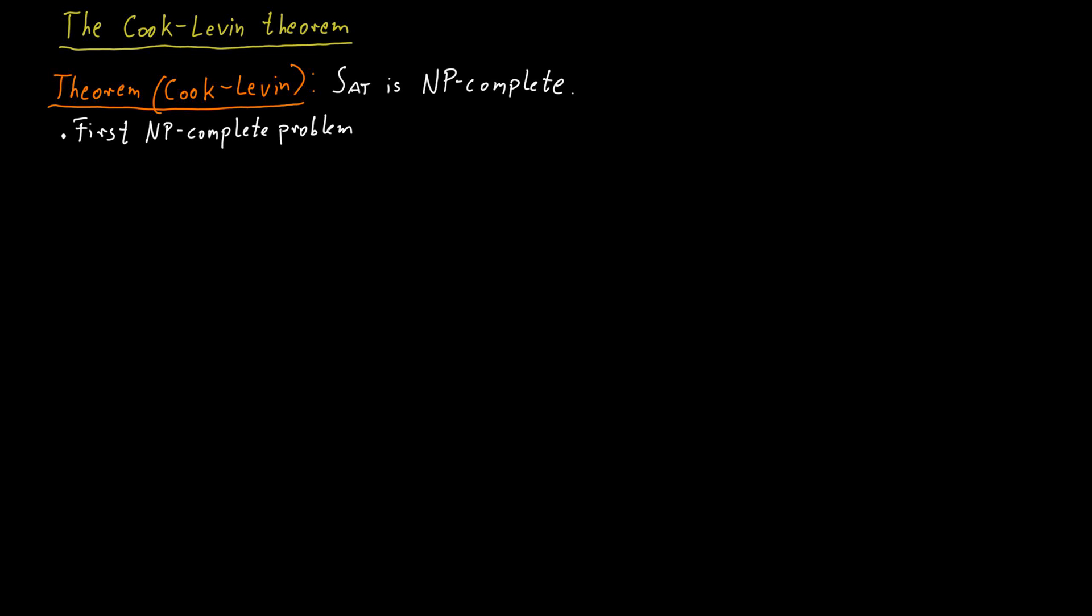So this is what we would have to do in the Cook-Levin theorem for satisfiability. But once we have one NP-complete problem, it turns out that this becomes much simpler. Once we know that satisfiability is NP-complete, we can easily show that some other problem X is NP-complete by reducing satisfiability to it using a polynomial time Karp reduction.